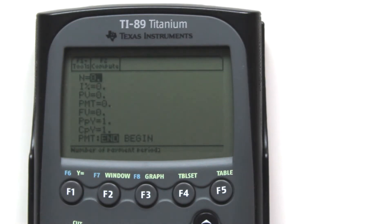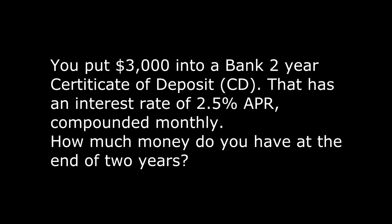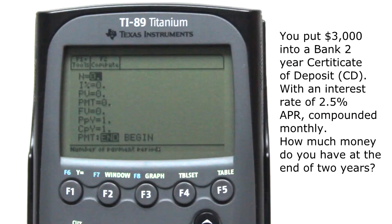Now we're ready to enter new information. Problem number 2. You put $3,000 into a Bank 2-Year Certificate of Deposit CD that has an interest rate of 2.5% APR, compounded monthly. How much money do you have at the end of the 2 years? Let's enter the data.